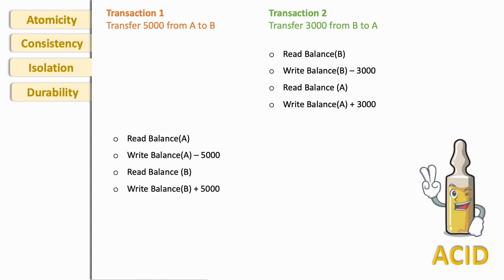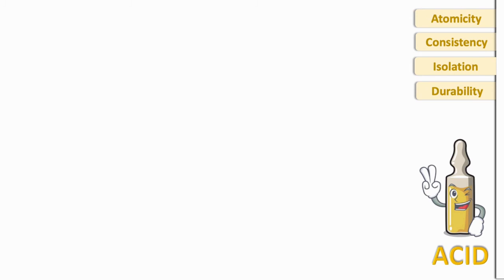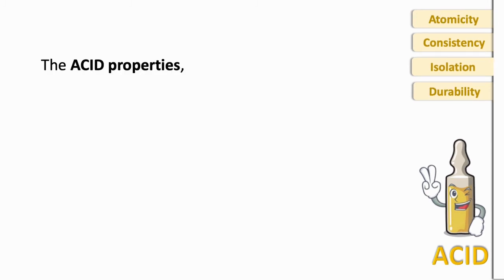Even if they are using same data, they are not using each other's dirty data. So user feels that only his transaction is running on the database. So now you know all the properties. The ACID properties in totality provides a mechanism to ensure correctness and consistency of a database.